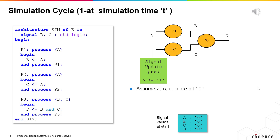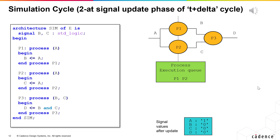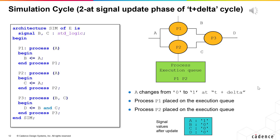At a particular time in the simulation, the signal update list will contain all signals which have been assigned a value and are waiting to be updated. The process execution list will contain all processes triggered by a signal event and are waiting to be executed. Let us say that there has been an event scheduled upon signal A — for example, A is currently 0 and is assigned to 1 at time t nanoseconds. A is placed on the signal update list. As there are no processes to be executed in the process execution queue at t nanoseconds, simulation time proceeds by delta, which is the next time where an activity is scheduled, and signals in the signal update queue are updated. When the signals are updated, A takes the new value 1. A is in the sensitivity list of processes P1 and P2, so both processes are placed on the process execution list. Hence, in the first phase of t plus delta, A equals 1, and processes P1 and P2 are in the process execution queue.